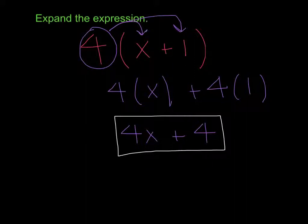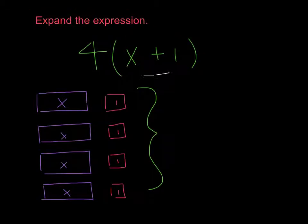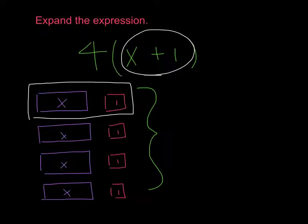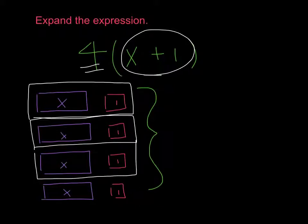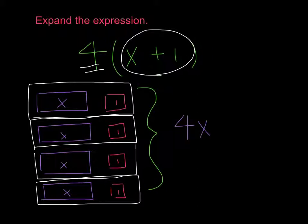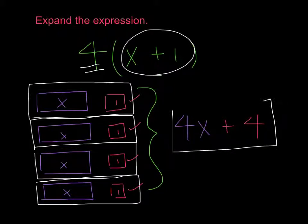To see what this means drawn: we've got x plus 1 repeated 4 times — x plus 1, x plus 1, x plus 1, and x plus 1. That's going to leave you with 4 x's and 4 ones. If you go back and look at the last slide, the last slide gave us the same answer: 4x plus 4.